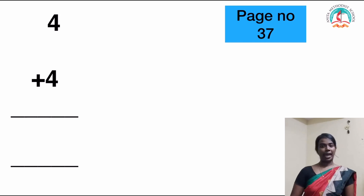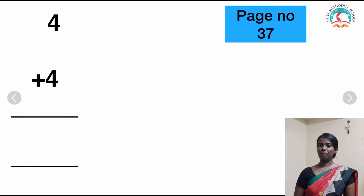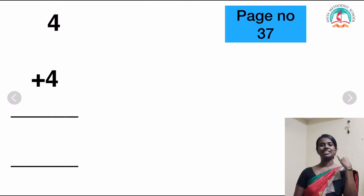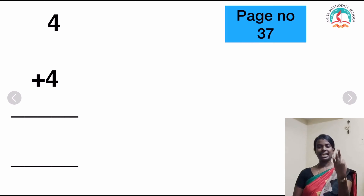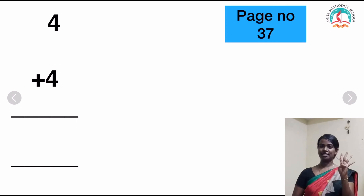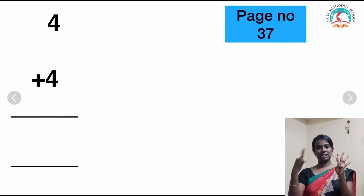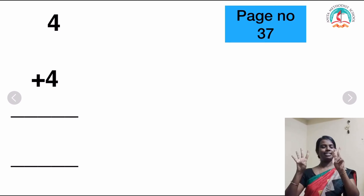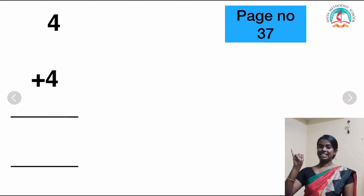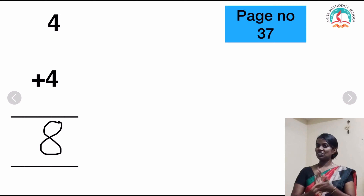And the next one, we are going to add these numbers using fingers. Let's open fingers for number 4. So how many fingers do I have to open? 4. 1, 2, 3 and 4. What is the second number? The second number is also 4. Open 4 fingers: 1, 2, 3 and 4. Shall we count the total number of fingers? 1, 2, 3, 4, 5, 6, 7 and 8. Good job children.